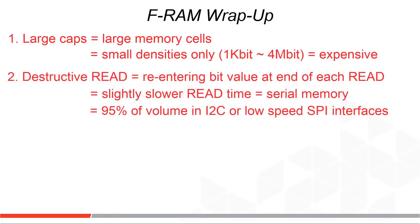Reading the FRAM bit is destructive. That sounds bad, but it just means that to read the bit, voltage is pushed against one plate of the capacitor to force charge on the other plate over to the sense amp. Lots of electrons due to high capacitance means it will be called a 1; not so many electrons means it will be called a 0. Since voltage was used to read the bit, the PZT position may have accidentally been changed, so the 1 or 0 value has to be written back onto the capacitor to restore that value at the end of the read function. There's no risk of losing information, but that extra time to rewrite the bit makes FRAM slower than other memory types — which is why FRAM is sold primarily as an I2C or low-speed SPI serial memory, where read and write speeds are not that important.